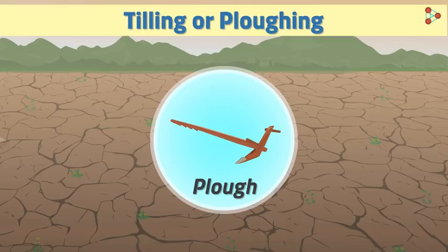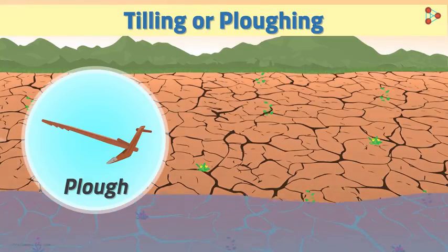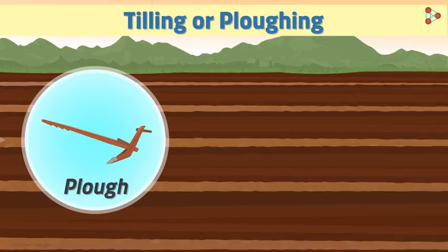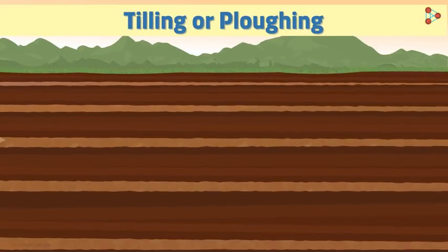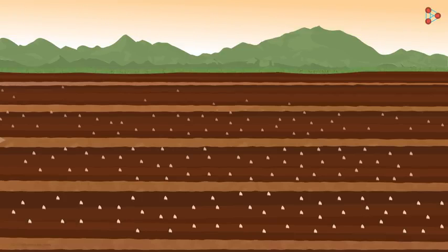But what if the soil is hard? Would it be easy to plough? No, it won't be. Hence the soil may have to be watered before ploughing. Even after ploughing, huge chunks of soil could be left behind. These chunks need to be broken down into smaller fragments. Soil also needs to be levelled so that the land is even and sowing of seeds can take place on this land.